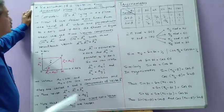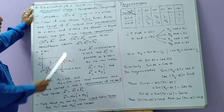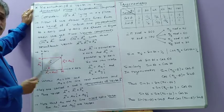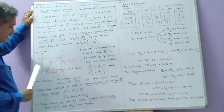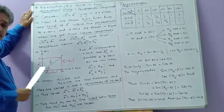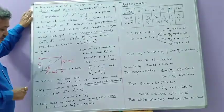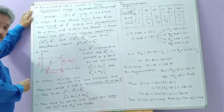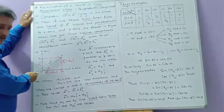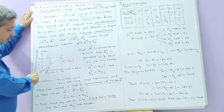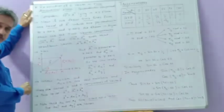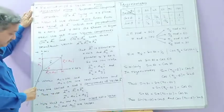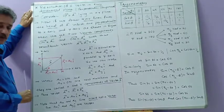Now let us see the resolution of a vector in two dimensions — that is, resolution of a vector in terms of two perpendicular vector components. Here we have a two-dimensional plane with x-axis, y-axis, and origin. We take vector OP equal to vector A, lying in the xy-plane — neither on the x-axis nor on the y-axis. Since it lies in the xy-plane, it must have two vector components: one in the x-direction and another in the y-direction.